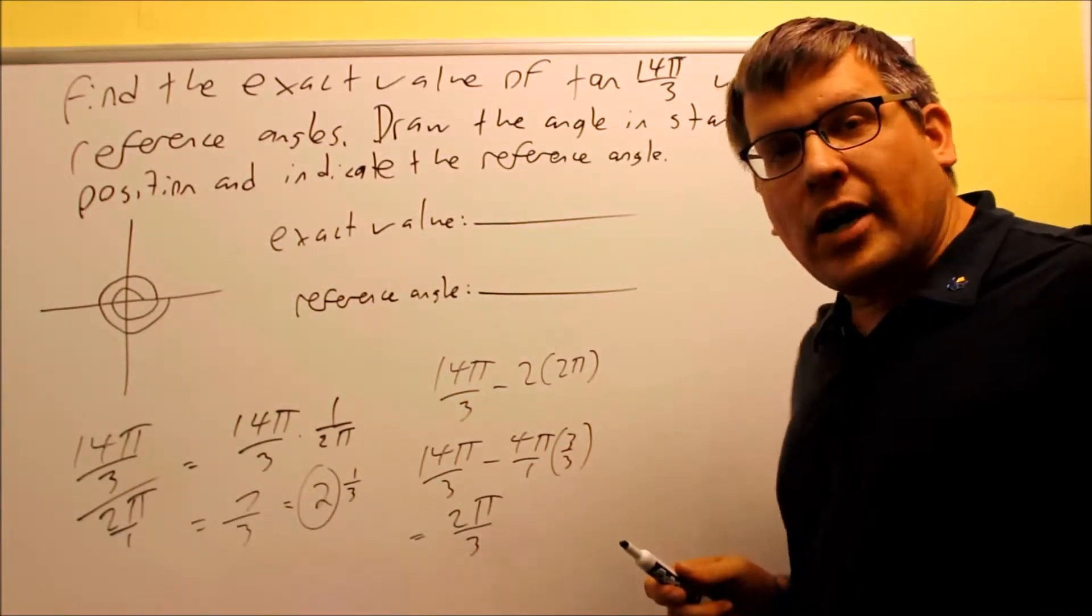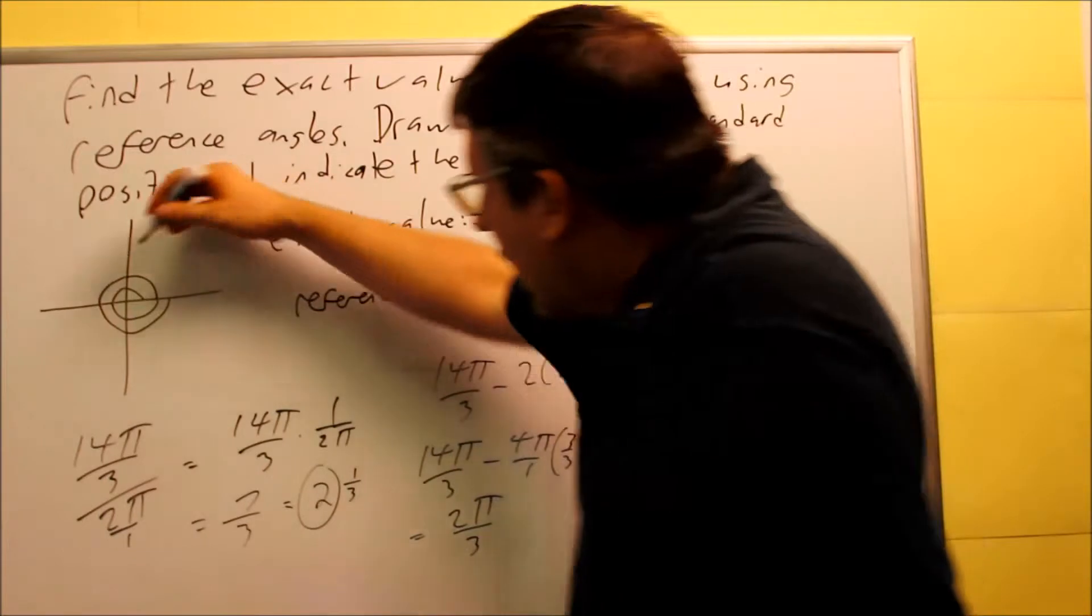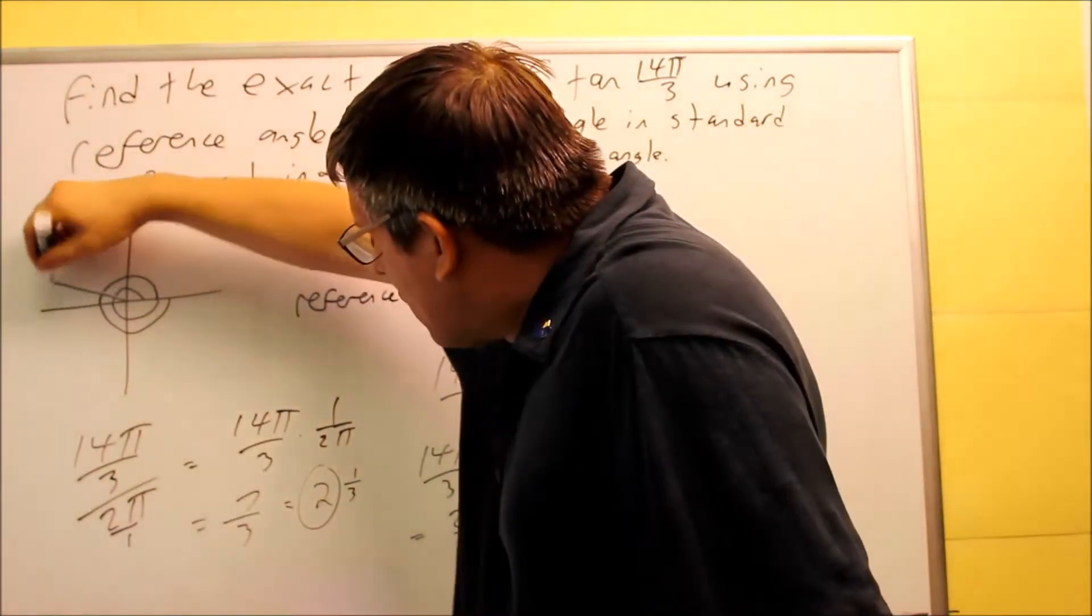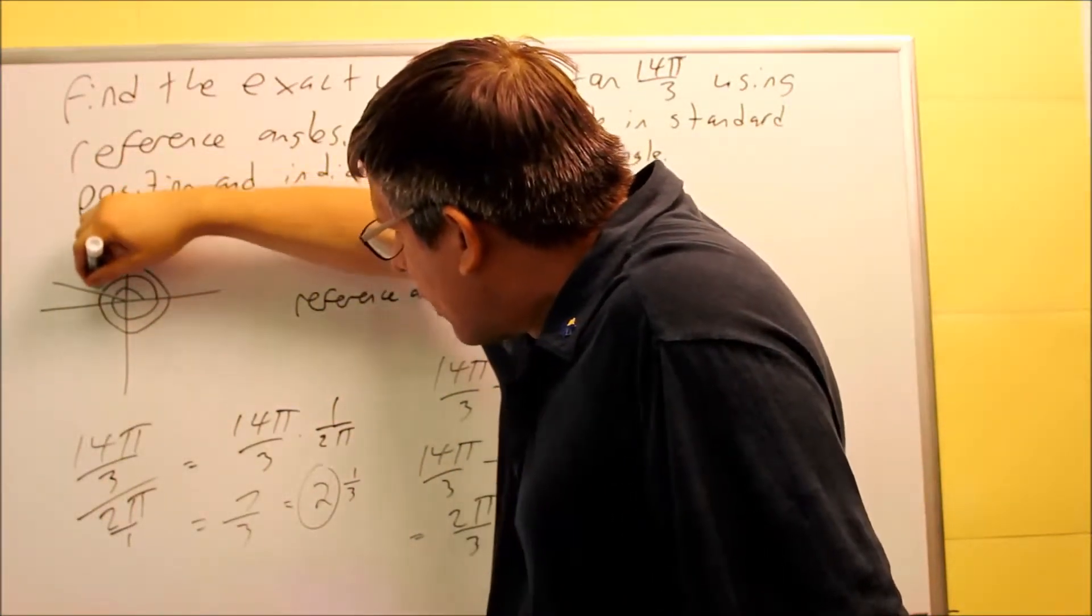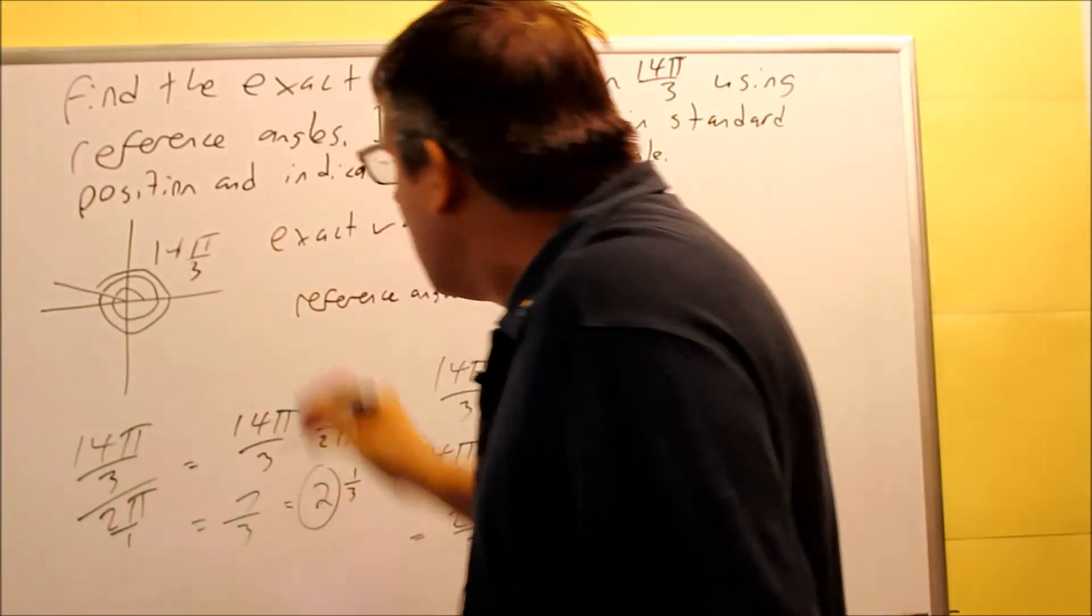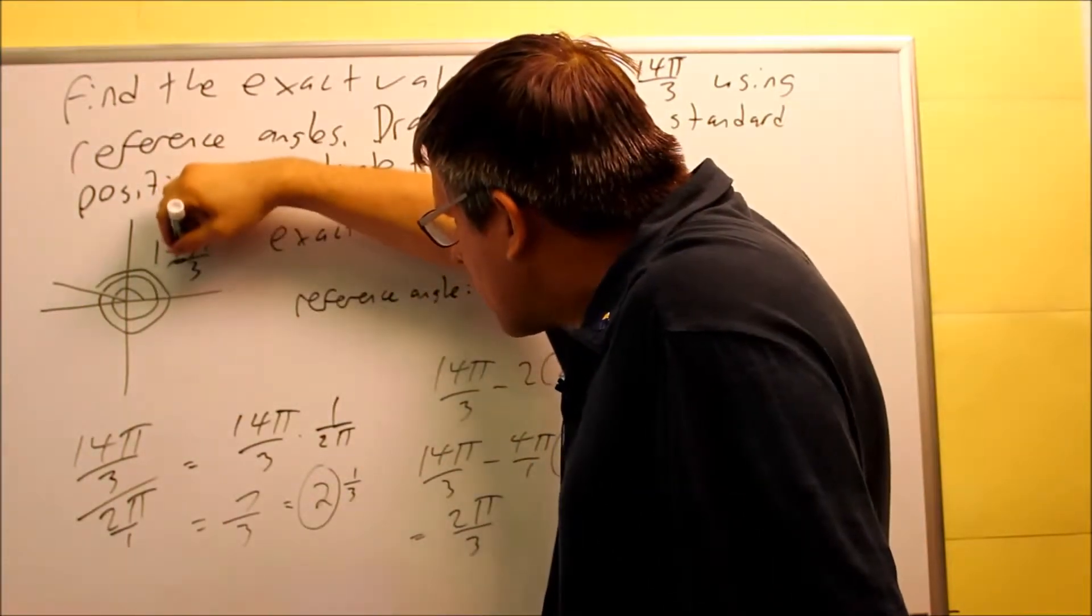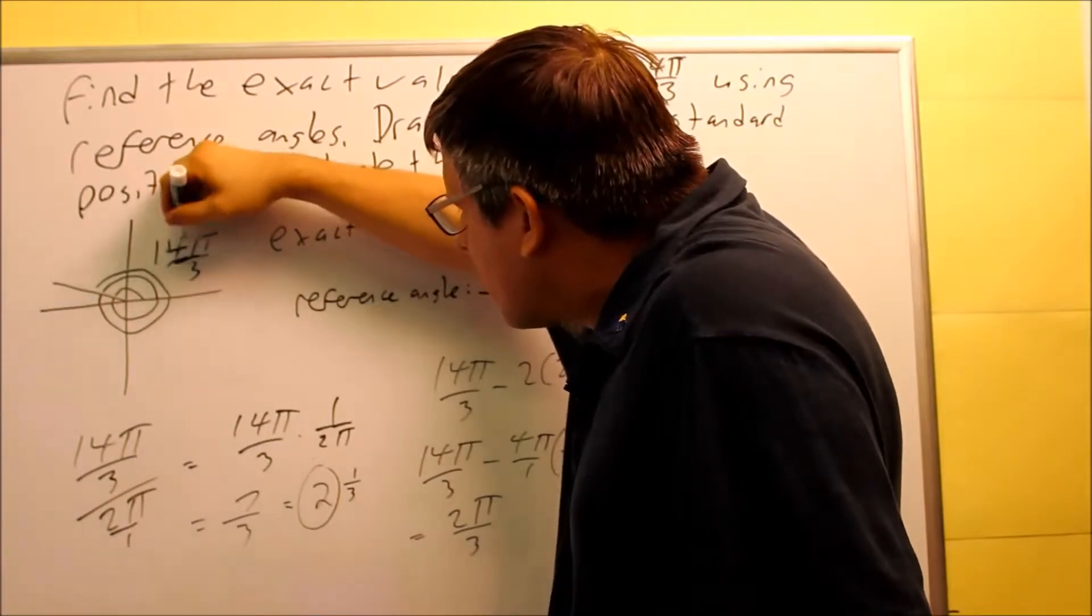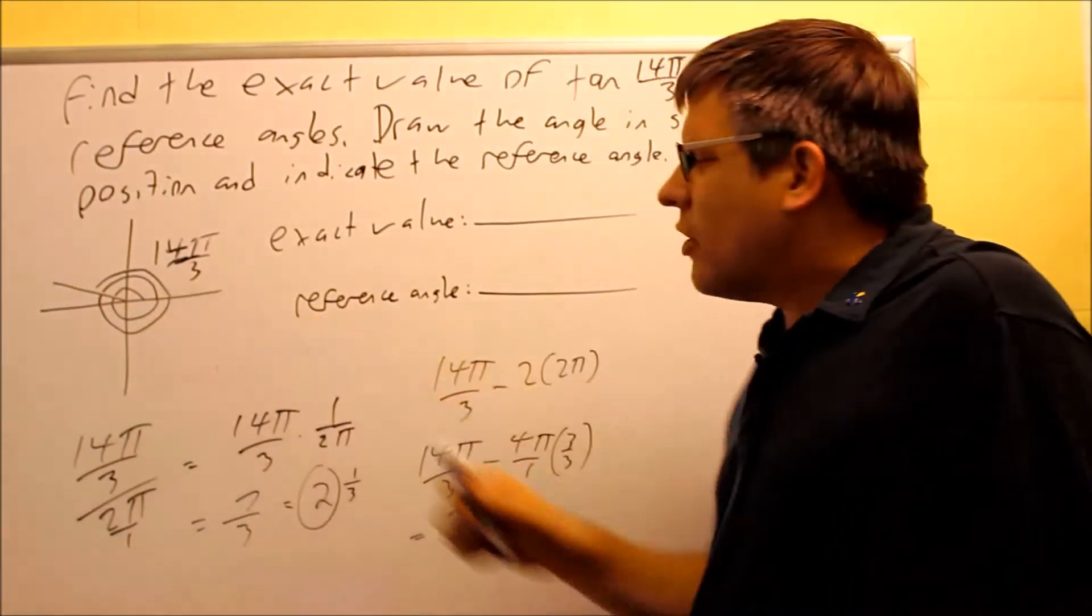So, I've got to go around twice to get to here. The remaining part I'm going to go around is going to be the 2π over 3. So that's going to end up putting us into the second quadrant. It's going to look like that. So this is our 14π over 3. That's what that looks like drawn in standard position. So that's that angle right there.